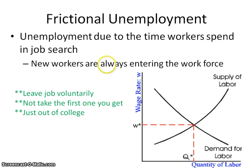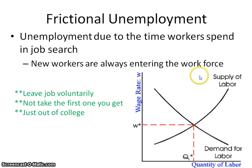You have those that are just out of college and entering the workforce for the first time, so they're actively seeking and trying to find something. You also have those entering the workforce or looking for a different job who might be offered a job but don't take it because it's not the right one for them — they're going to wait until they find a better job. So even at equilibrium, you can still have this frictional unemployment where people are looking for a job and trying to find one.